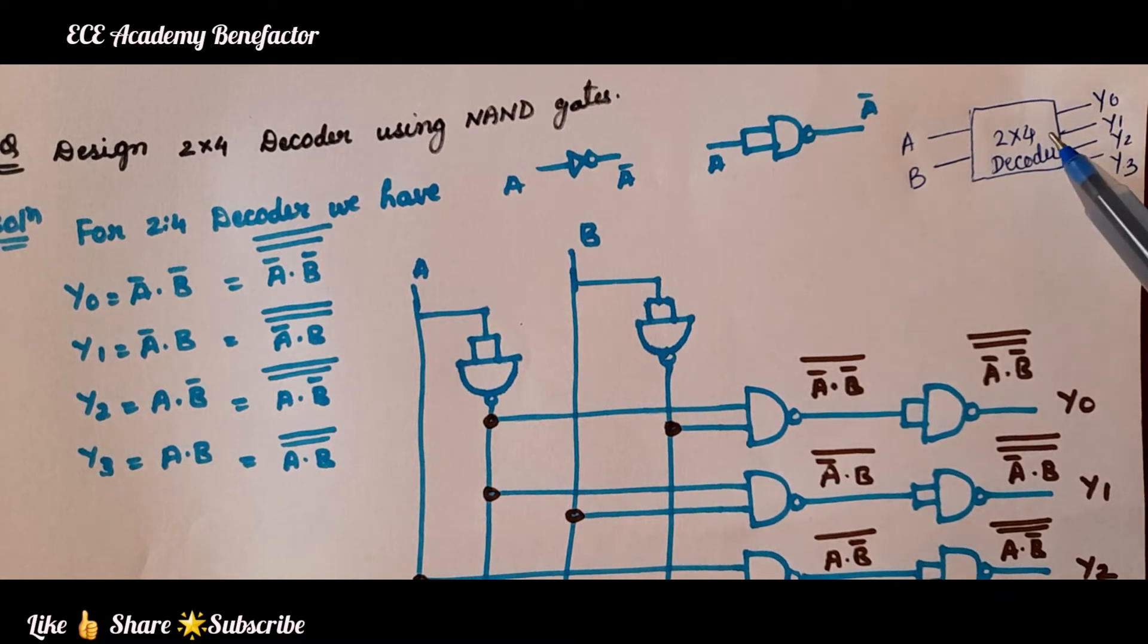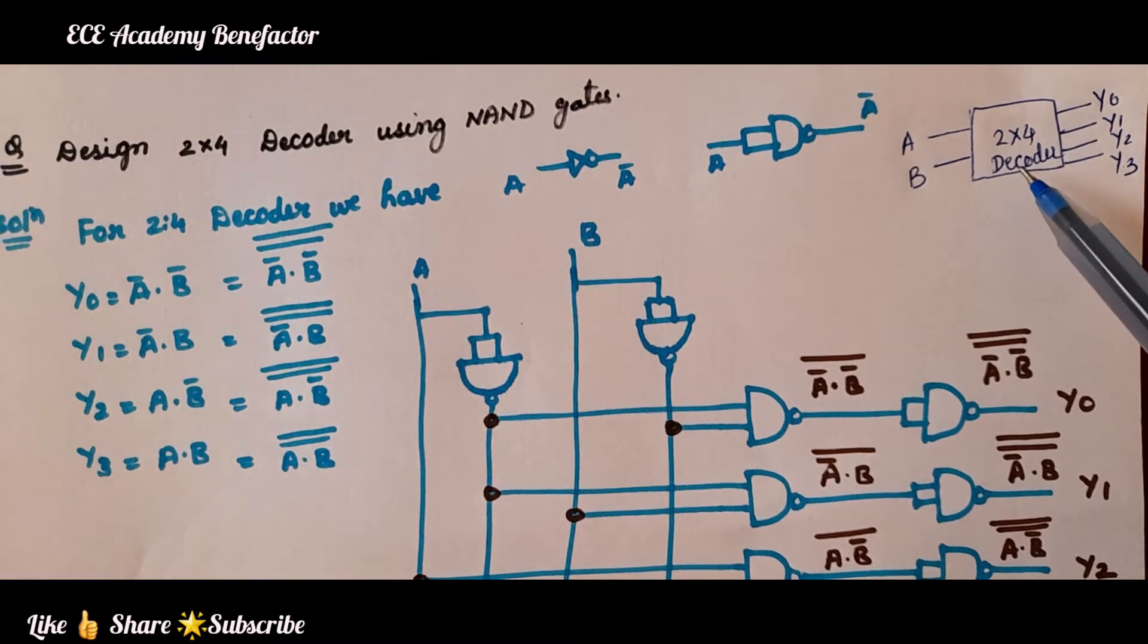Now, the task is we have to implement this 2×4 decoder using NAND gates. In the previous class, we have seen it using AND gates. Now, we have to design using NAND gates.